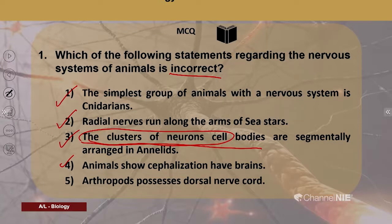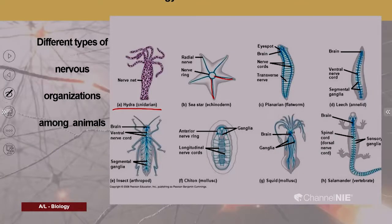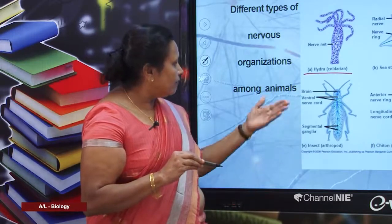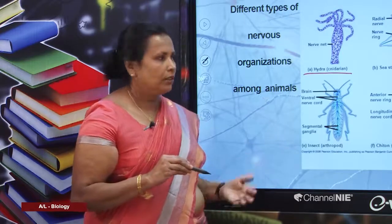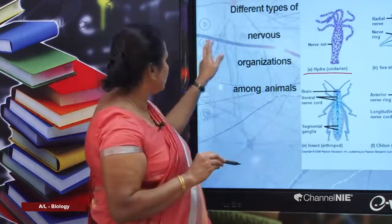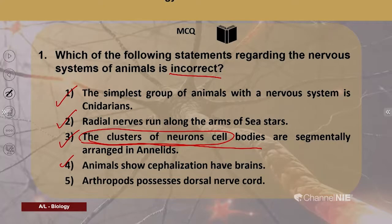Fifth option: arthropods possess a dorsal nerve cord. Looking at the diagram, the brain is situated dorsally, and dorsal ganglia are in the head region of the arthropod. However, the nerve cords are ventrally situated — ventral nerve cords are found in arthropods, not dorsal nerve cords. Therefore, this statement is the incorrect answer.